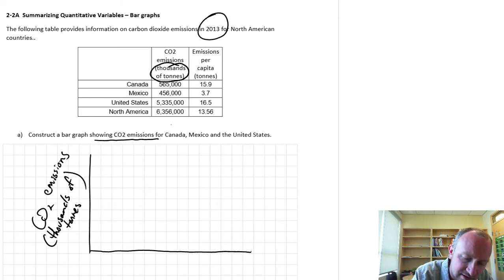On the x-axis, I'm going to include that information for Canada, Mexico, and the US. So this is the specific country, and then I'll label those as Canada, Mexico, and the US.